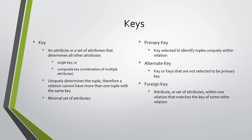An attribute or set of attributes, within one relation, that matches a key — usually the primary one — of some other relation is called a foreign key. For example, the attribute for department number within a tuple for an employee is the primary key for identifying the department in the department's relation.